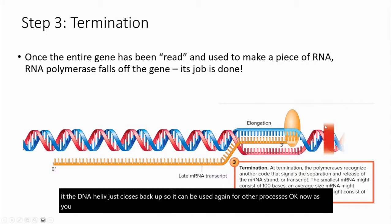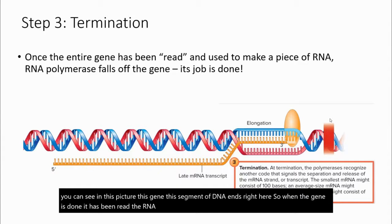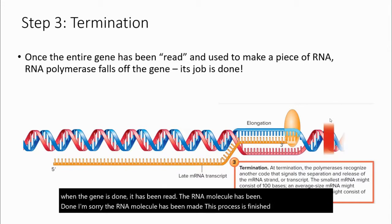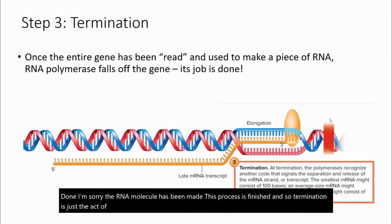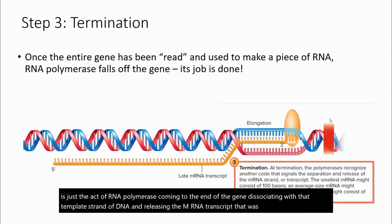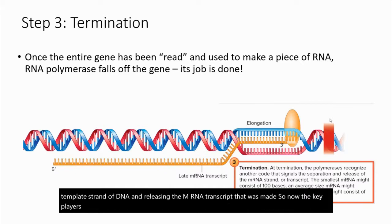As you can see in this picture, this gene, this segment of DNA ends right here. So when the gene is done, it has been read, the RNA molecule has been made. This process is finished. And so termination is just the act of RNA polymerase coming to the end of the gene, dissociating with that template strand of DNA and releasing the mRNA transcript that was made. So now the key players are separated. We have the RNA that we need for translation and we are all done with it.